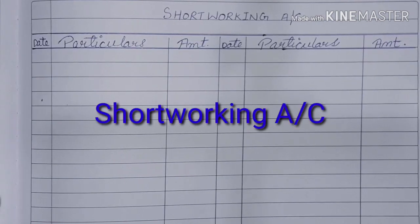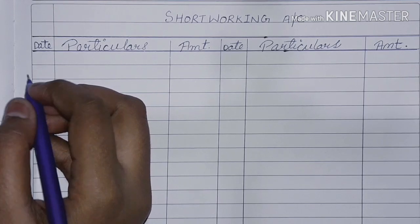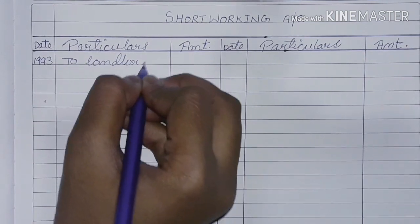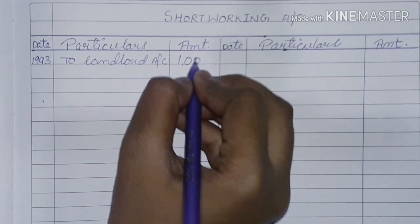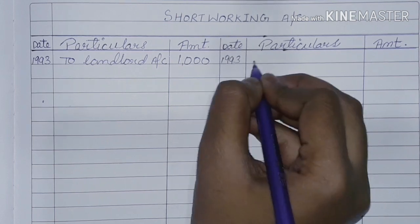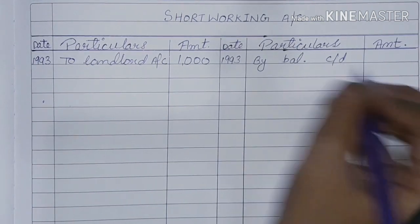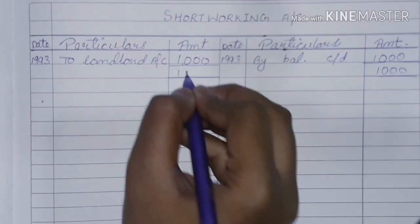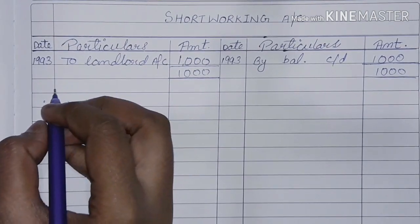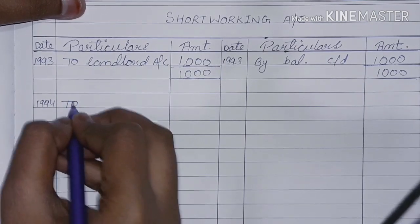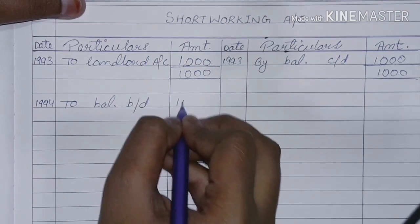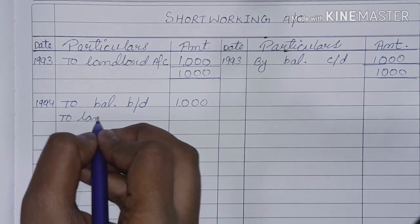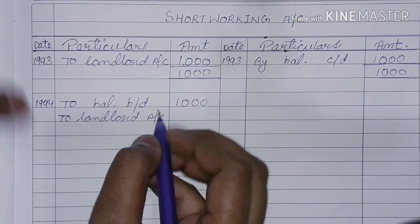Now we will make the short working account. In 1993, to landlord account: opening short working account was $1,000. In this year it will be closing balance — by balance C/D $1,000. Total: $1,000. Then this account will open in 1994 — to balance B/D $1,000. Then in the second year we have short working: to landlord account.